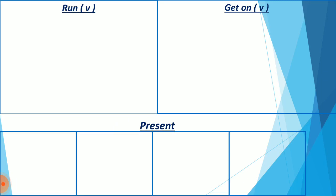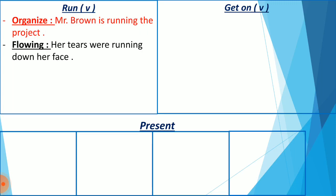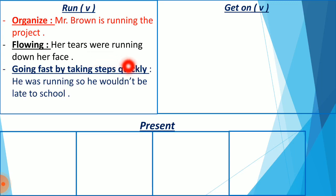Let's start with the verb 'run.' Run can mean to organize — like when we say 'Mr. Brown is running the project,' meaning Mr. Brown is managing/organizing the project. The second meaning is flowing — like when we say 'her tears were running down her face,' meaning her tears were streaming. We can also use this meaning for rivers. The final meaning is going fast by taking steps quickly — the meaning we all know: to run. Like when we say 'he was running so he wouldn't be late to school.'